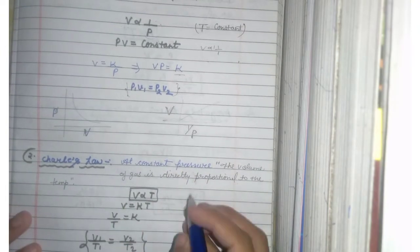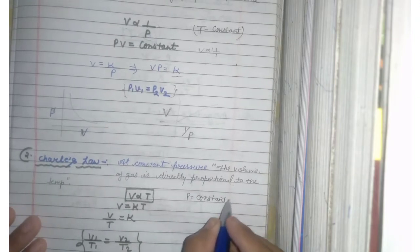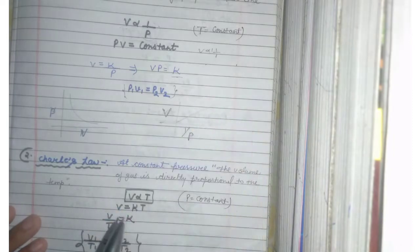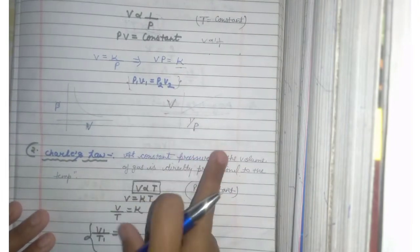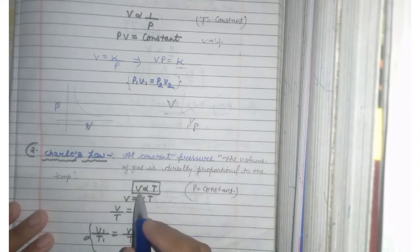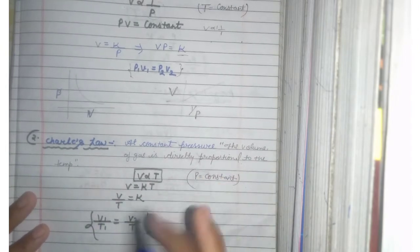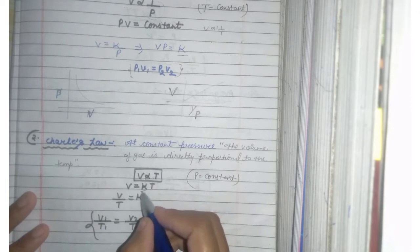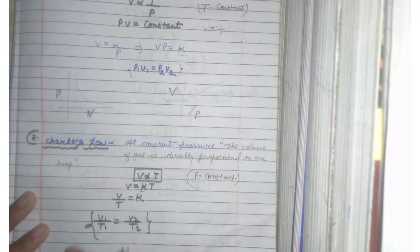At constant pressure, the volume of a gas is directly proportional to the temperature. We can call the absolute temperature. When I said that the sign of proportional, then there is a constant which means K.